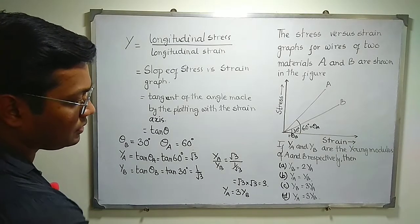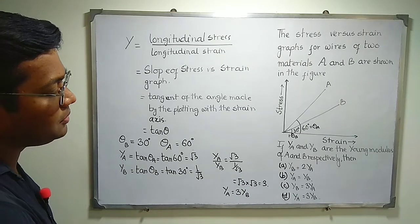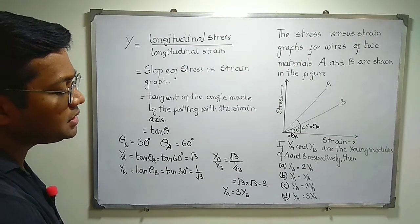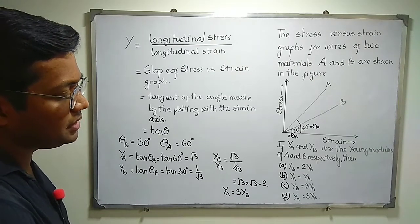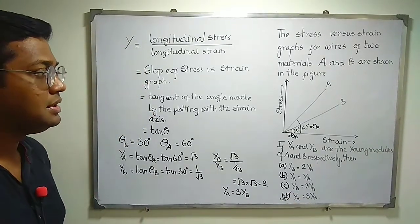So you can see option D is correct. The Young modulus of material A is three times that of the Young modulus of material B. Option D is correct. Thank you all.